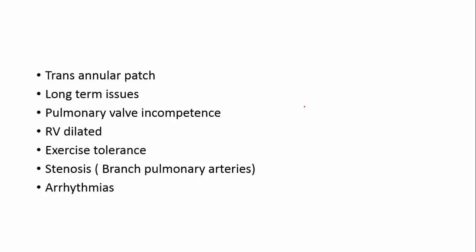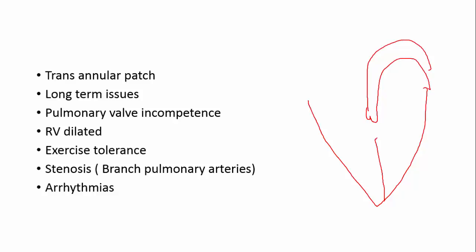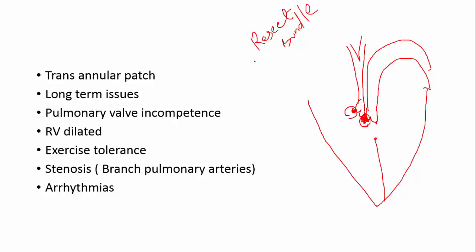The definitive treatment is called a transannular patch. Let's draw a Tetralogy of Fallot: you have your aortic override, your ventricular septal defect, severe pulmonary stenosis, and a muscle bundle obstructing your flow. The things we need to do are: first, resect the muscle bundle which is obstructing the flow. Then the surgeon would put scissors across the RVOT. That's called a transannular patch type of repair — they essentially put scissors across the pulmonary valve.